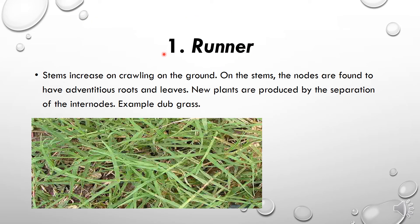Runners creep along the ground. On the stem, the nodes are found to have adventitious roots and leaves. New plants are produced by the separation of the internodes. For example, duck grass. Many grasses are examples of the runner-type stem — they basically run on the ground.